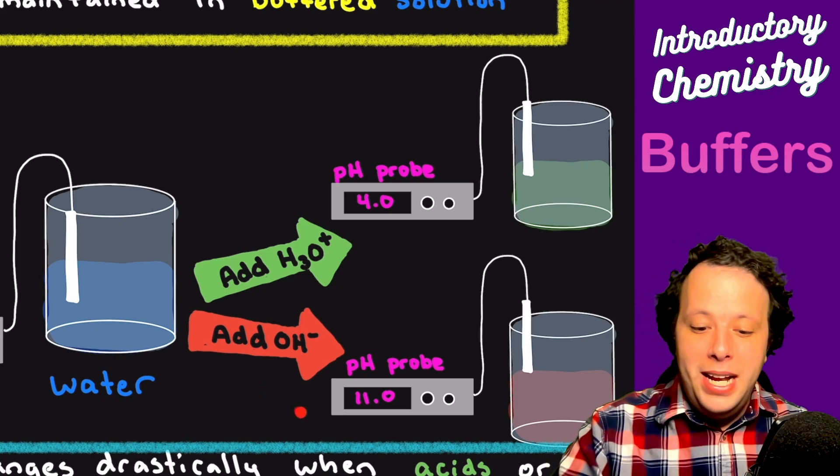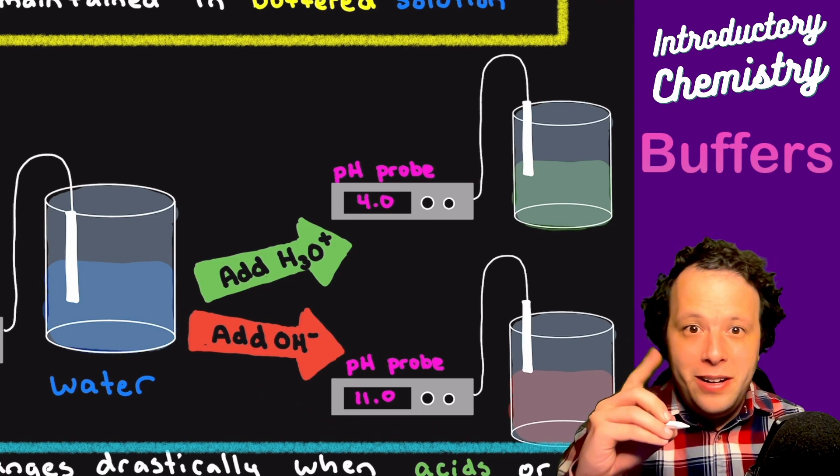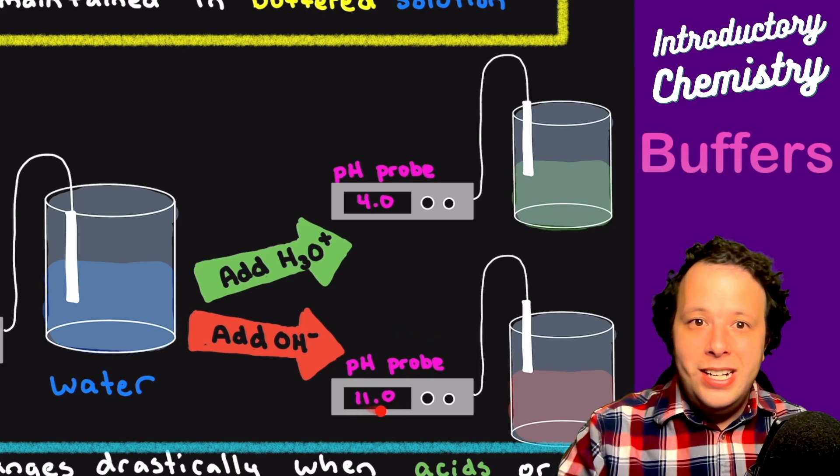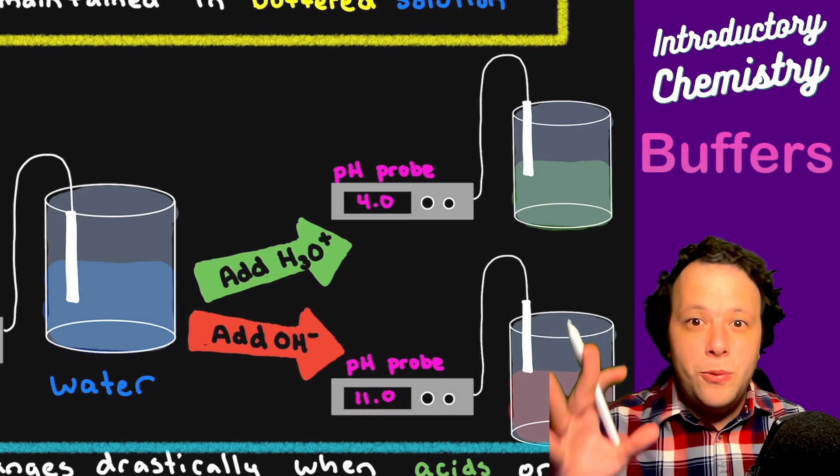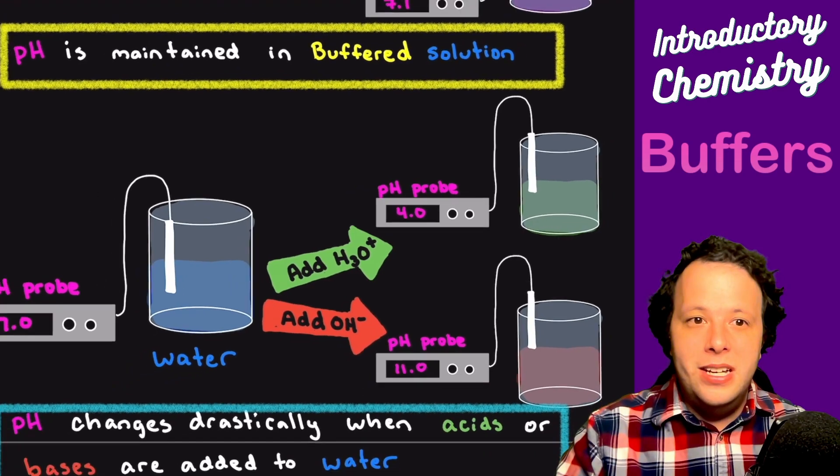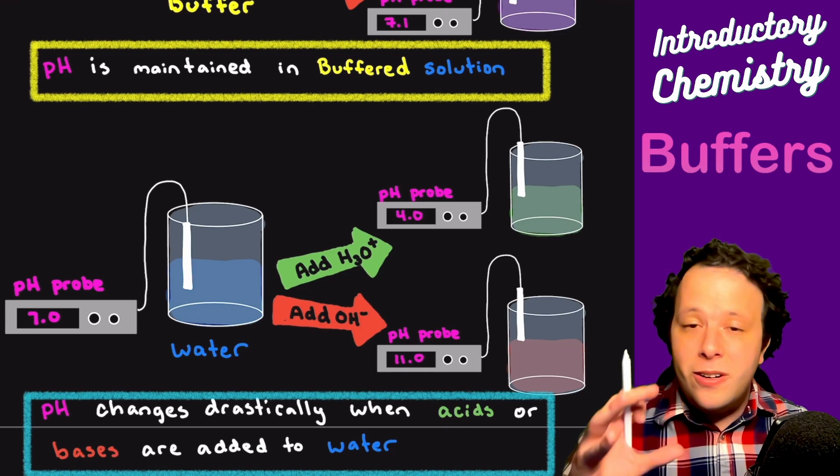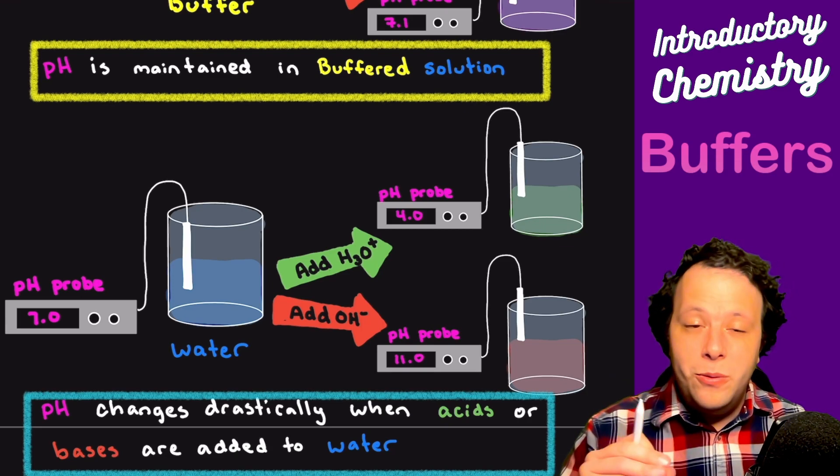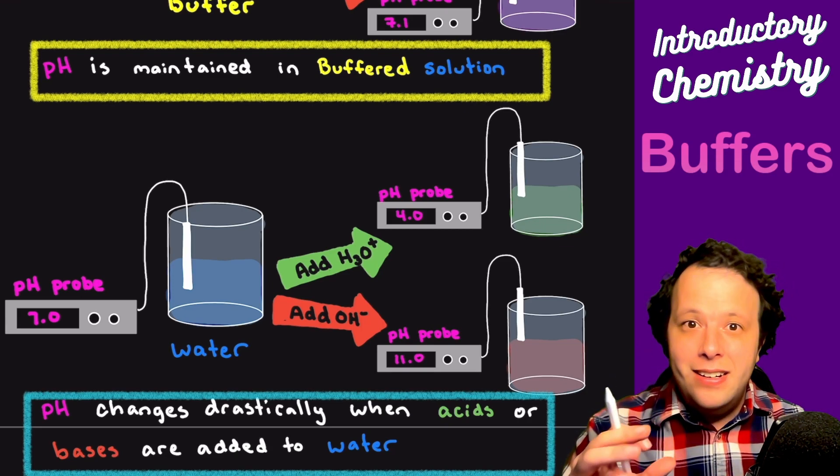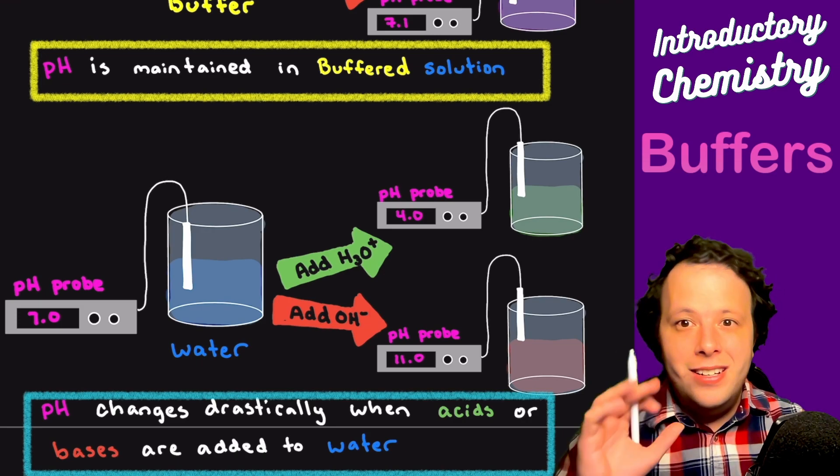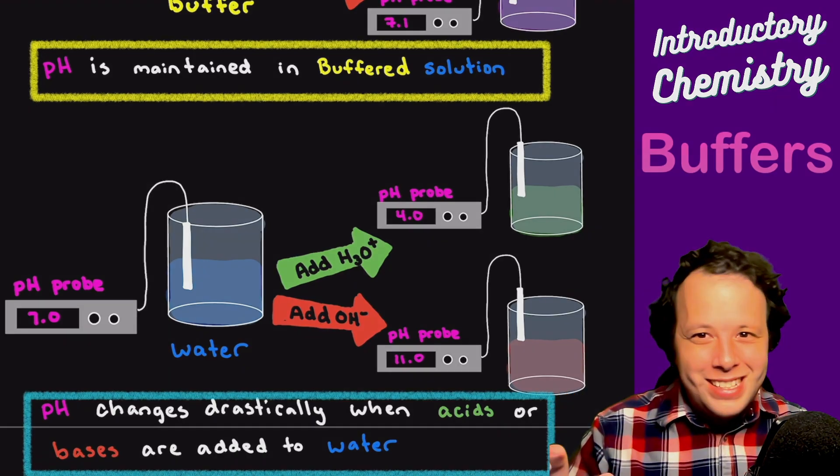If I add a base, the same amount that I added above to water, it changed all the way to an 11. It went a huge difference. pH changes an insane amount when you add it to water or any regular solution. A buffer resists. So how does that work? Let's take a look.